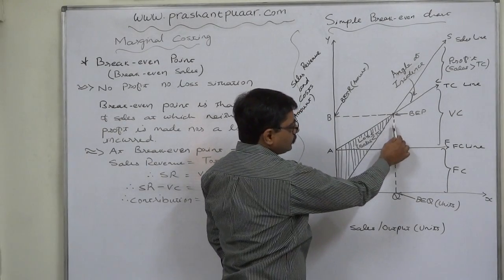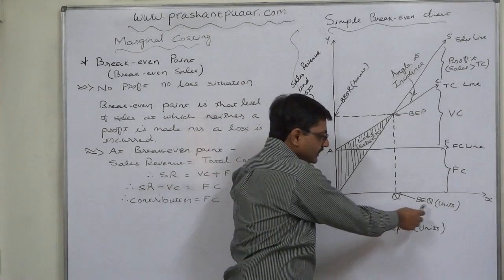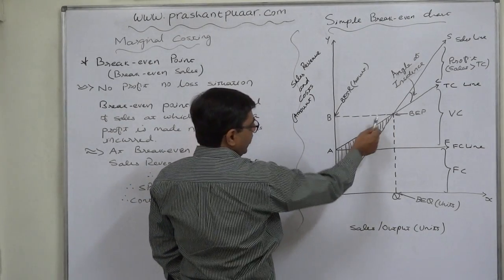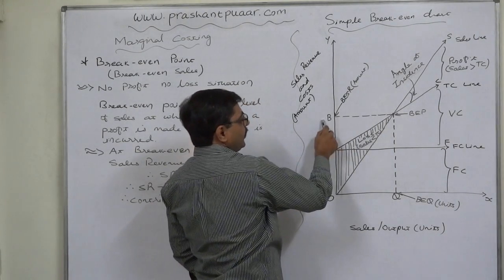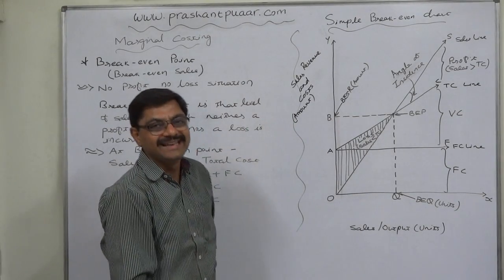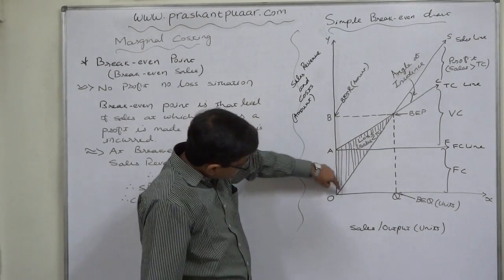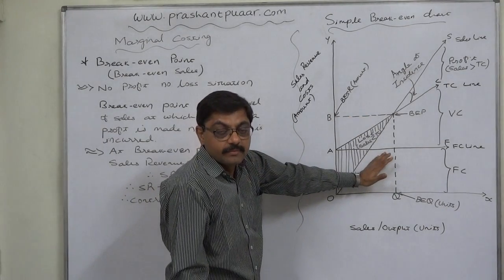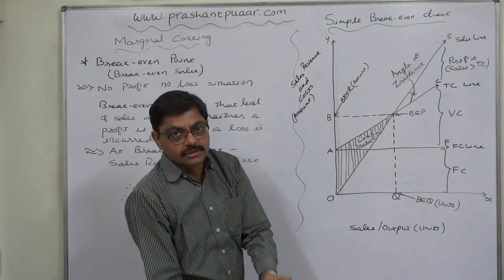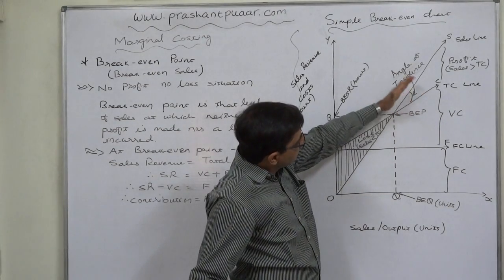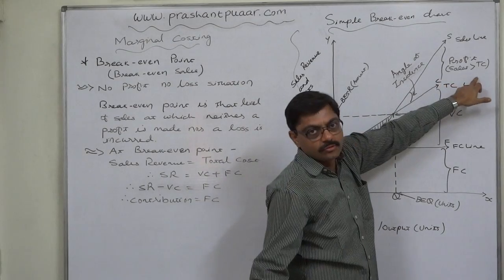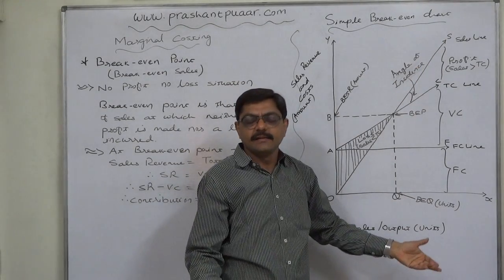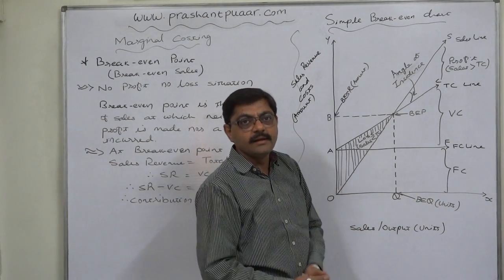To find the quantity at break-even point, draw a dotted line down to the X axis at point Q — that is the break-even quantity in number of units. Drawing a dotted line across to the Y axis at point B gives the break-even sales revenue, i.e., break-even point in terms of amount. The area before the break-even point shows a loss, because the total cost line is above the sales revenue line. After break-even point, the sales line is above the total cost line, so the gap between them shows profit — excess of sales over total cost is the profit.